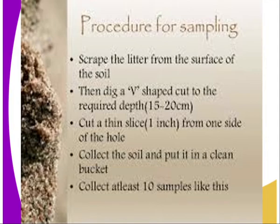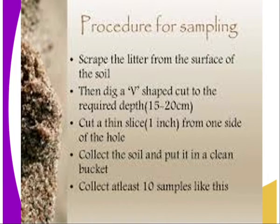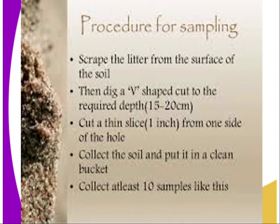You can use a soil auger or a garden trowel. Then cut a thin slice, about one inch, from one side of the hole. Then collect the soil and put it into a clean bucket. Repeat the procedure by collecting soil from at least 10 samples or 10 areas within the field, using either of the methods highlighted before.